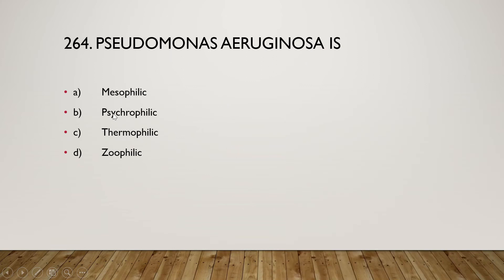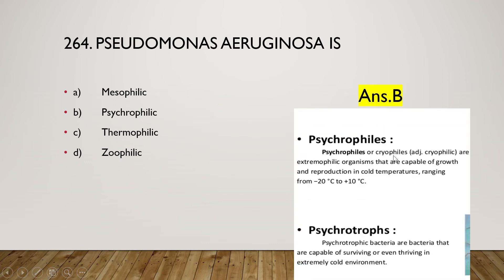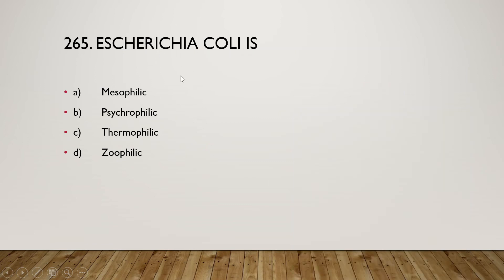Pseudomonas aeruginosa is mesophilic, psychrophilic, thermophilic, or xerophilic? The right answer is option B, psychrophilic. Psychrophiles are extremophilic organisms capable of growth and reproduction in cold temperatures ranging from minus 20°C to 10°C, mostly around plus 5°C. Psychrotrophs are bacteria capable of surviving or thriving in extremely cold conditions.